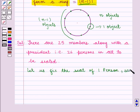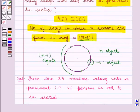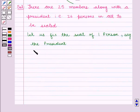Let us fix the seat of 1 person, say the president. Then using the key idea we get that the remaining 25 members...